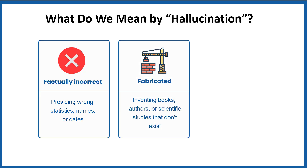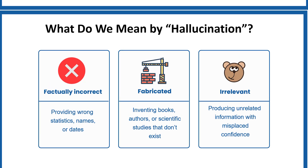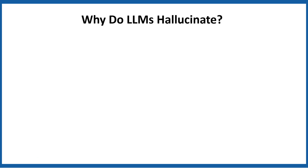Fabricated — in this case, LLM starts inventing books, authors, or scientific studies that don't exist. Irrelevant — in this case, LLM provides unrelated information with misplaced confidence. Unlike humans who can say I don't know, LLMs are trained to almost always provide an answer. This makes them prone to sounding right while being wrong sometimes.